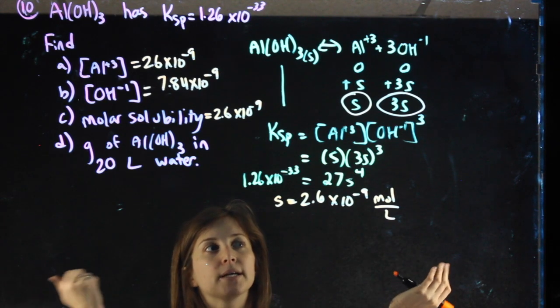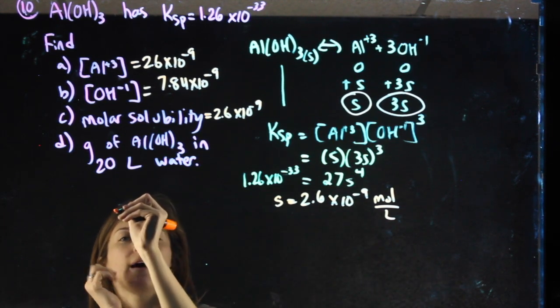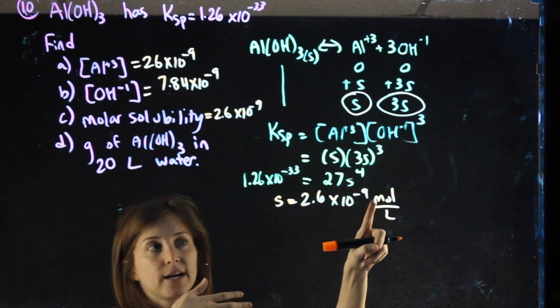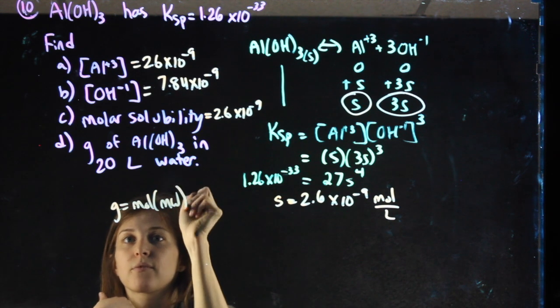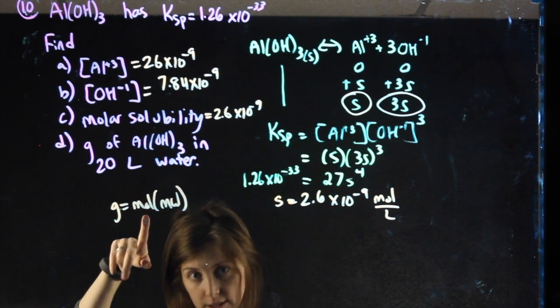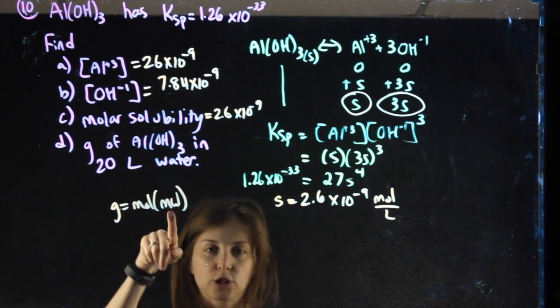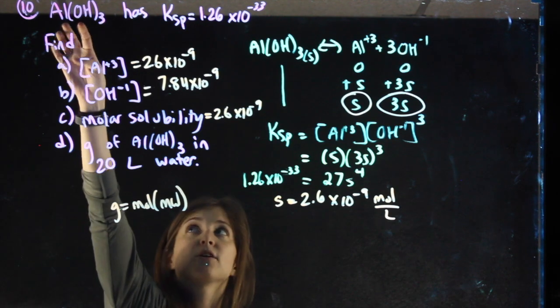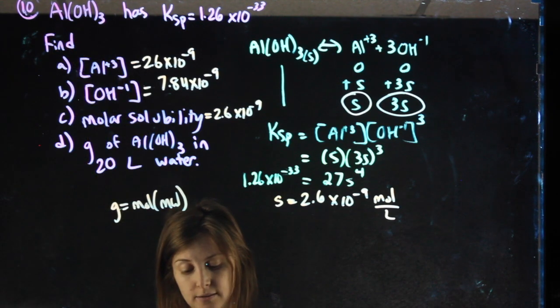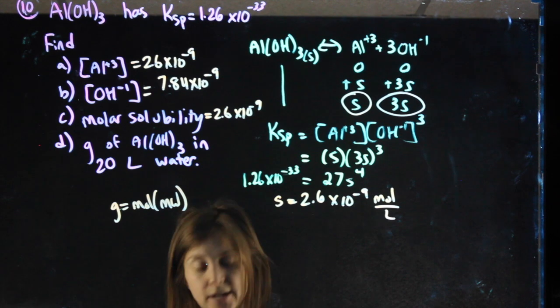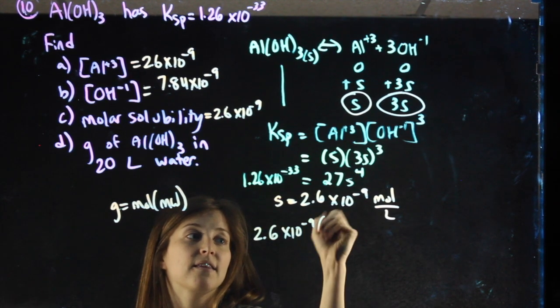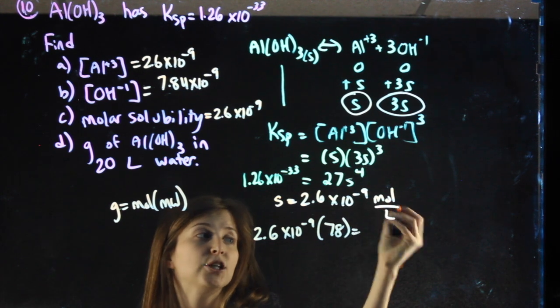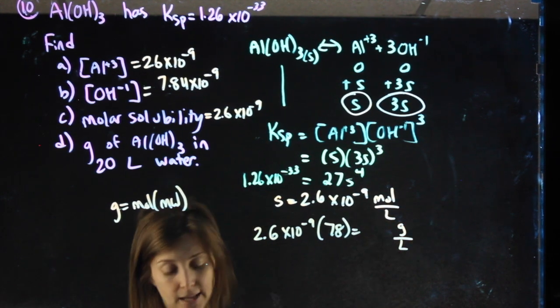Most of you probably start by knowing that to go from moles to grams, we just multiply by molecular weight. So to go from moles per liter to grams per liter, we still just multiply by molecular weight. The molecular weight will be of aluminum hydroxide. So that molecular weight is 78. If I do 2.6 times 10 to the negative 9 times 78, that changed the moles to grams, but I still have my per liter.